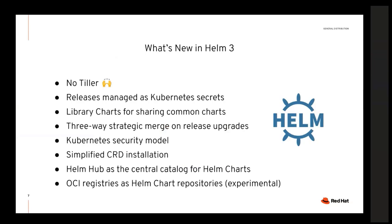In Helm 3, the three-way strategy merge addresses this. During an upgrade, Helm looks at three things: the release metadata (what manifests were generated), the new chart version (what you want to go to), and — crucially — the live state of the objects in the cluster. It merges all three together, so if Istio has injected a sidecar or something else has made live changes, those get preserved during the upgrade instead of being overwritten.